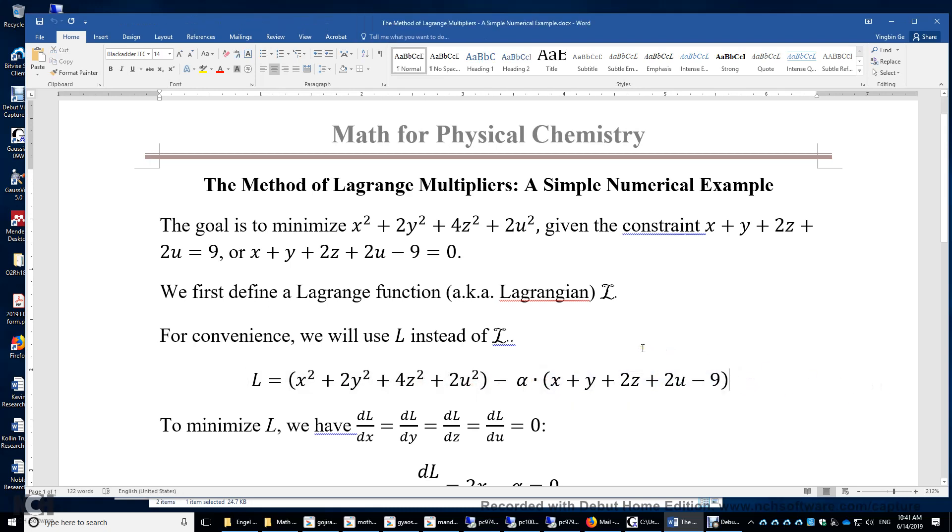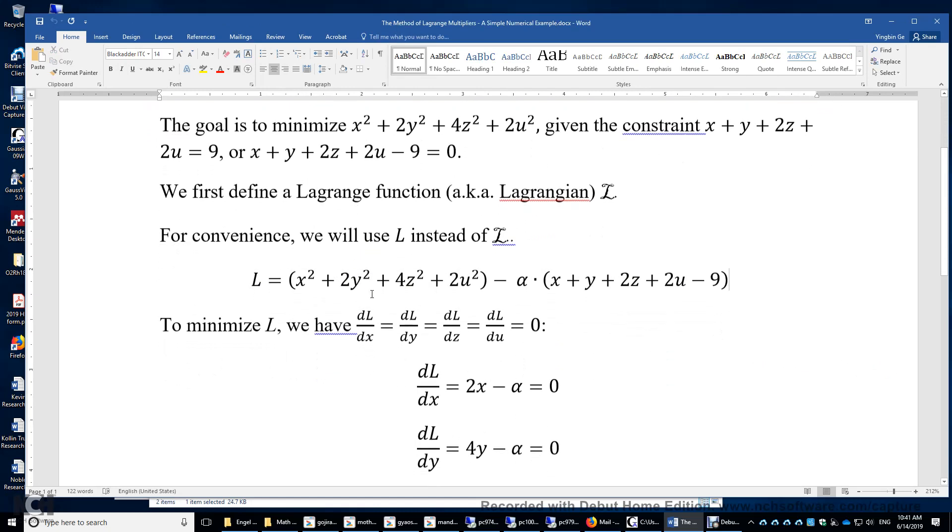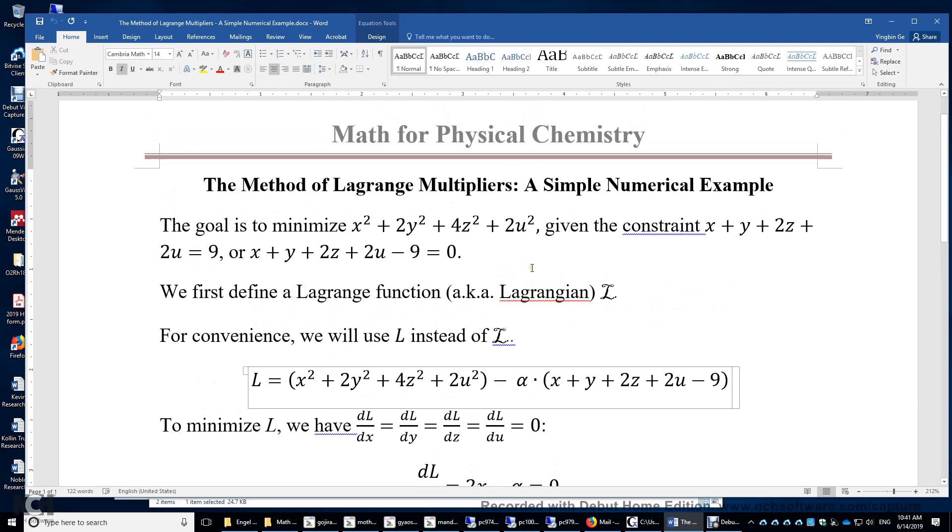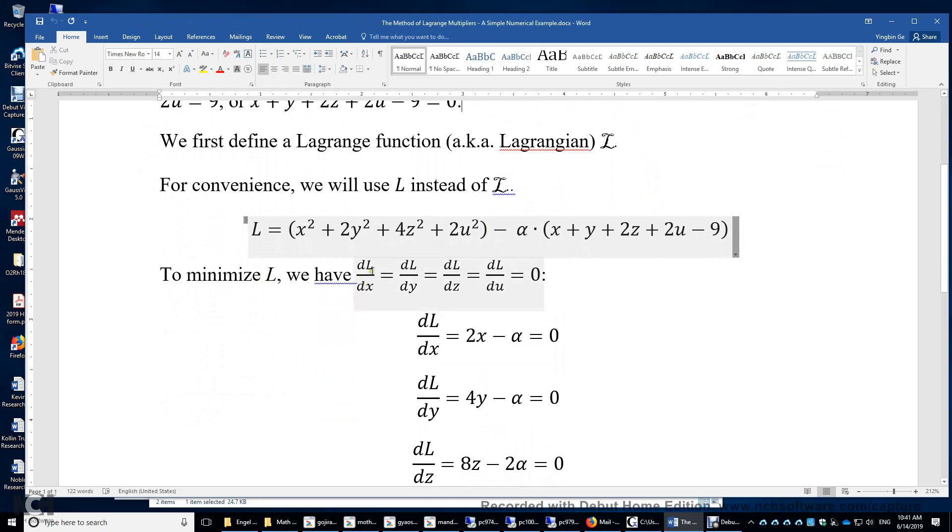All right, so this is called Lagrangian or Lagrange function. Now we're going to minimize L under this constraint. And again, alpha is called a Lagrange multiplier. And then to minimize L, we have to set dL divided by dx equals 0.